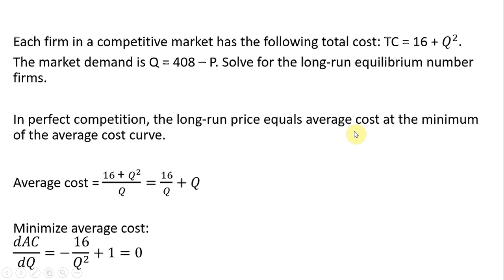In perfect competition, the long-run price equals average cost at the minimum point of the average cost curve. So first we get average cost, which is total cost divided by Q. So I took the total cost equation, divided by Q. We have average cost.